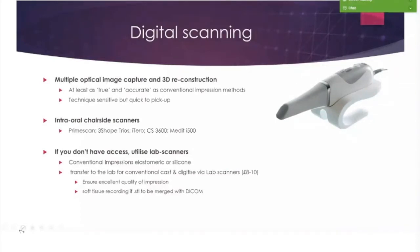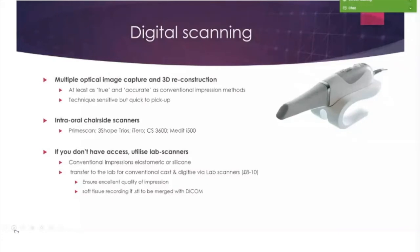Moving on to digital scanning. Digital scanning is basically — if you aren't involved in it yet and don't have a scanner — a digital scanner that takes multiple optical images and then reconstructs them three-dimensionally. The technology is now at least as true and accurate as conventional impression methods, certainly for short spans. Full arch technology is moving in that direction. It can be quite technique sensitive, but after using a number of different systems, it's actually quite quick to pick up. Each system has its own protocol. There's quite a wide range in cost.